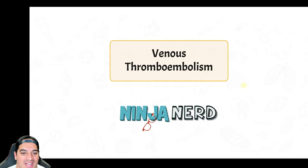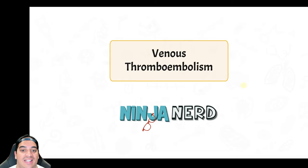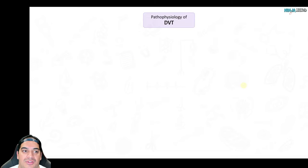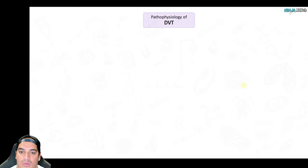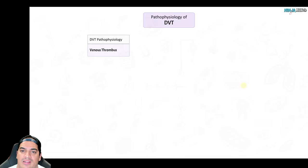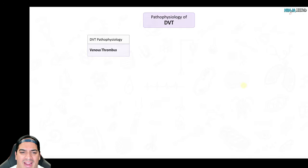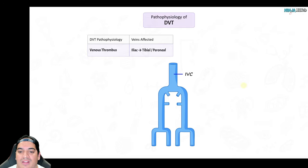In this video we're going to be talking about venous thromboembolism, which includes DVTs and PEs. Let's begin our discussion talking about the pathophysiology of DVTs or deep vein thromboses. The pathophysiology is that there is a clot, a thrombus, that develops within the veins — and usually it's the veins of the legs that are most commonly affected.